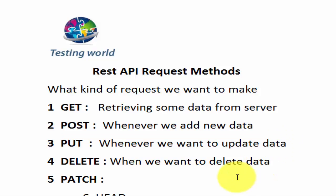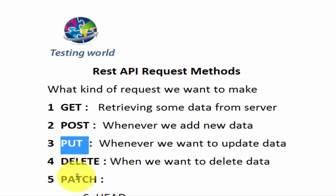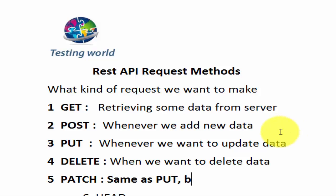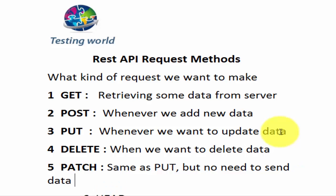But if you want to send only the updated details — like out of five fields, only one needs to be updated — you use PATCH method. With PATCH, you send only the one updated field; the rest of the data you are not sending, keep it the same. So the difference between PUT and PATCH: with PUT you send all data including updated and original fields, but with PATCH you send only the updated data and not the fields you want to keep the same.